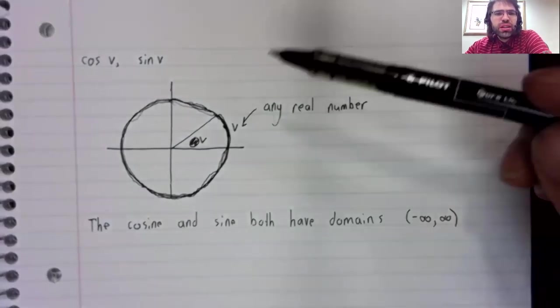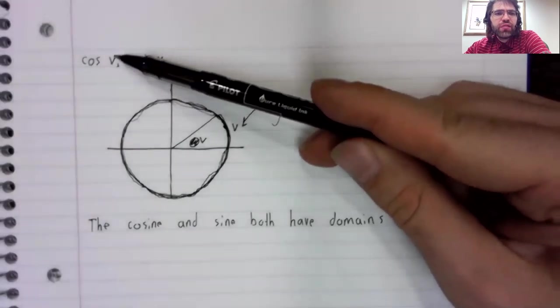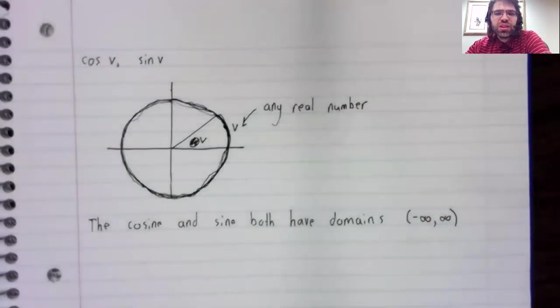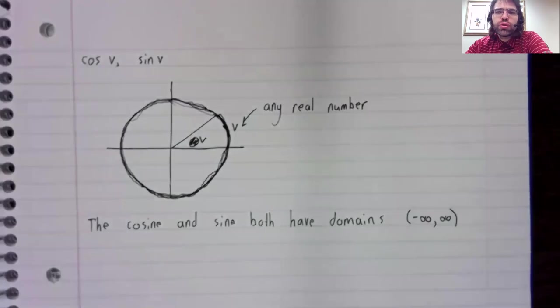And although it's probably easiest to think of v as a distance here, this is true whether v is measured in radians or whether v is measured in degrees.